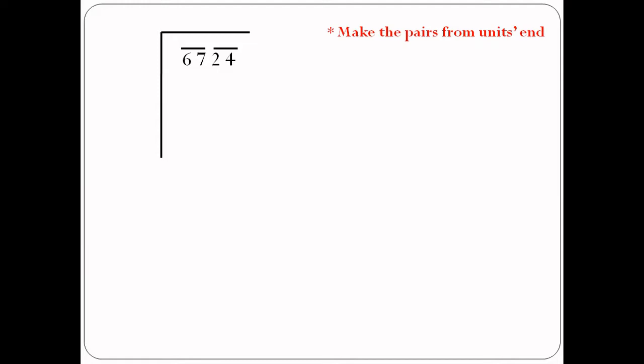Now we look at the first pair on the left-hand side, which is 67. The second step is: find the perfect square lower than or equal to 67. Since 67 is not a perfect square, we find the perfect square which is less than 67, which is 64.